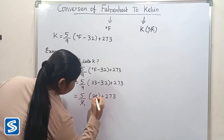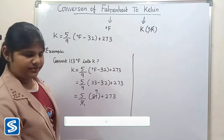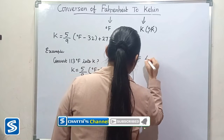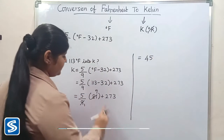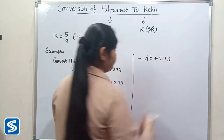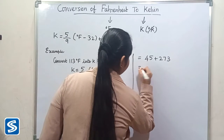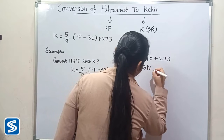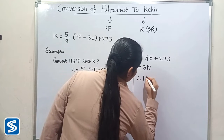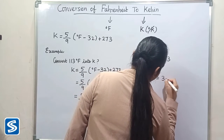Dividing 81 by 9 gives 9, so 5 × 9 equals 45. Then 45 plus 273 equals 318. Therefore, 113 degree Fahrenheit is equal to 318 Kelvin.